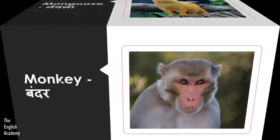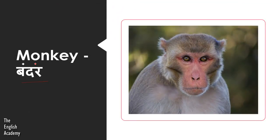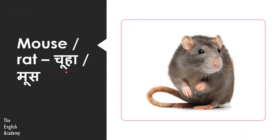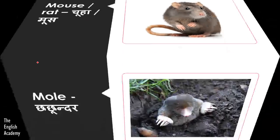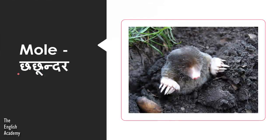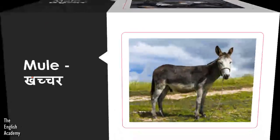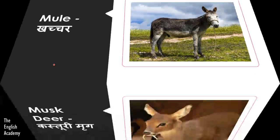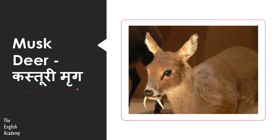Then we have Bandar — Bandar we call Monkey. Next is Chuha or Mouse — in English we can call it a Mouse or a Rat. The next is Chachundar, which we call Mole. The next animal is Khachar, which we call Mule. Then we have Kasturi Mrig, known as Musk Deer.